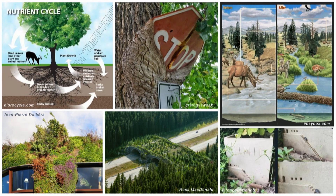I'm going to walk you through a story here through images. We start at the top and move down. This first image is a generic look at the nutrient cycle. If you introduce an element or disrupt one part of the cycle, that's going to have effects across the whole system. When we as humans build infrastructure or impact our environment, that changes all these cycles we do rely on — nutrient cycling, decomposition, the water cycle.